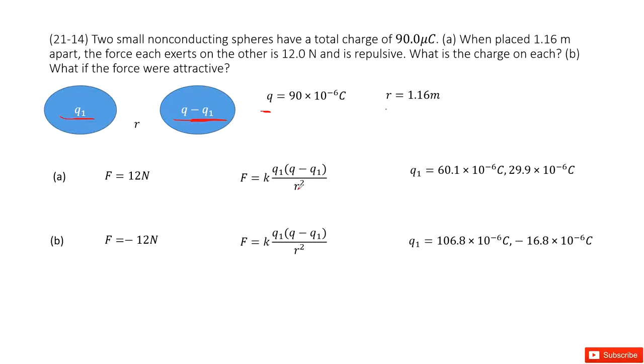And in this equation, you can see the F is given, k is a constant, R is fixed, and Q is given. So the only unknown quantity is Q1. You can solve this equation and get Q1 with two values there.